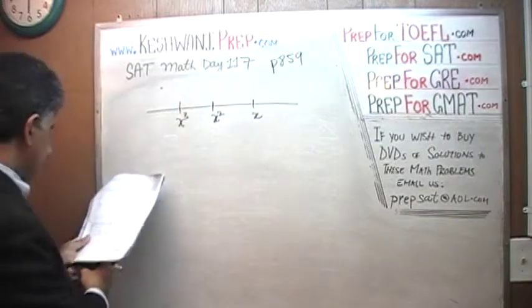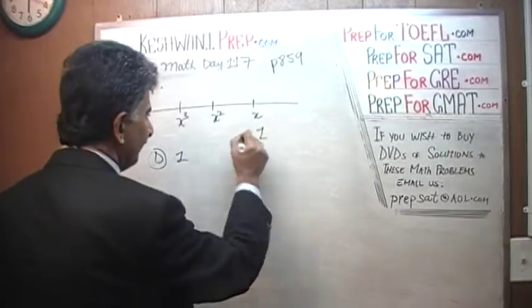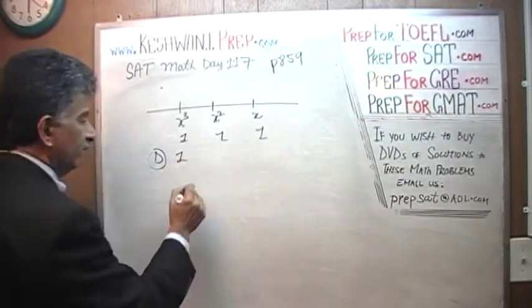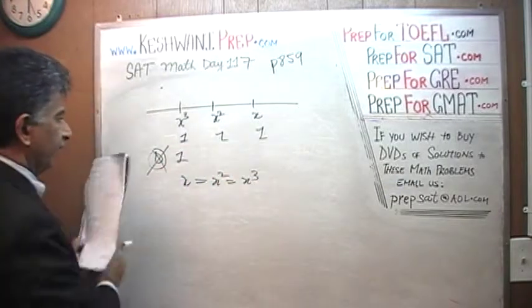The answer most certainly is not D. D says 1. Well, in that case, this is 1, this is 1, and this is 1. In this case, x is equal to x squared, which is equal to x cubed. Obviously, D is not the answer.